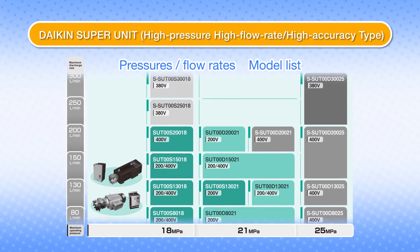The primary feature of the Daikin Super Unit is to make possible even higher pressures and flow rates. The supported range has greatly expanded compared to previous models.